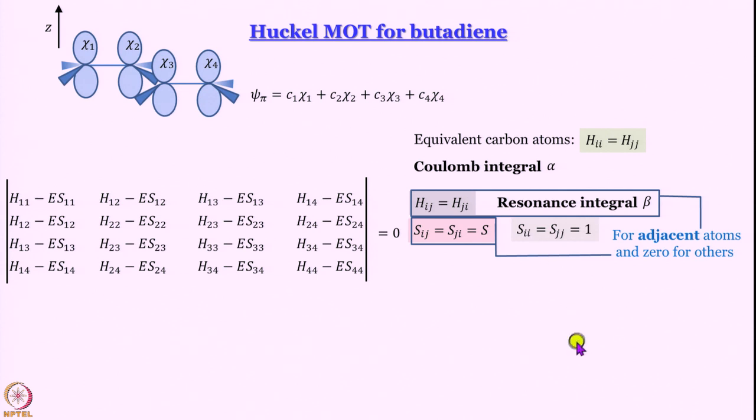As we have studied for H2 or H2 plus, when they come close together then only the overlap integral increases from 0 to some determinable value. So since 1 and 3 are far apart from each other anyway we can set that overlap integral to be equal to 0. In fact, in the simplest version of Huckel theory that we are going to use we are going to set all overlap integrals to be equal to 0. This might sound to be very arbitrary but then let us think what kind of overlap we are talking about.